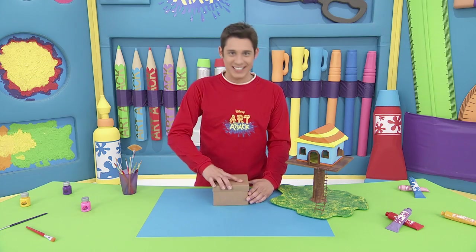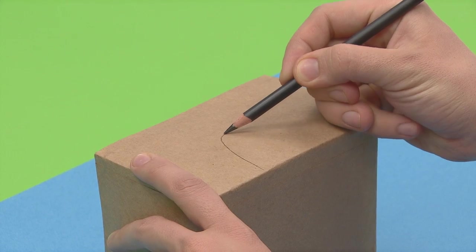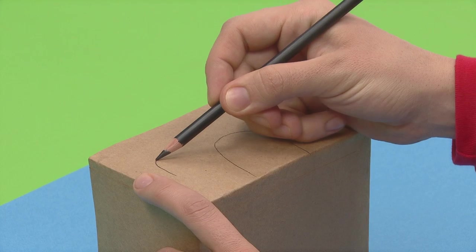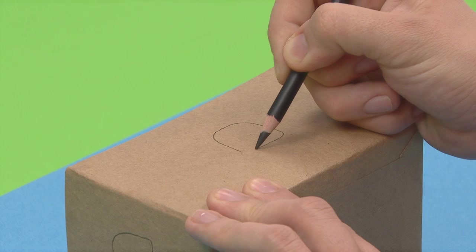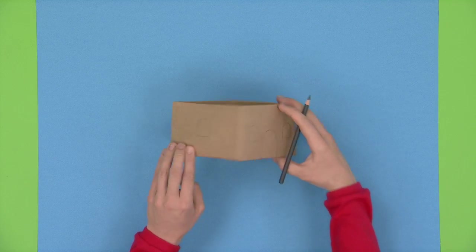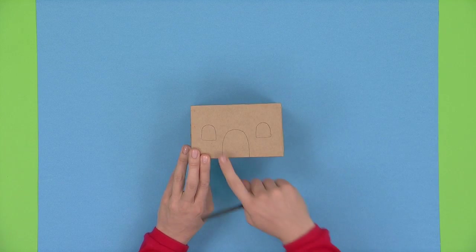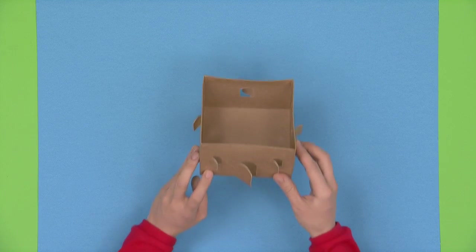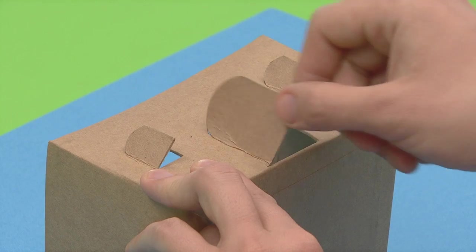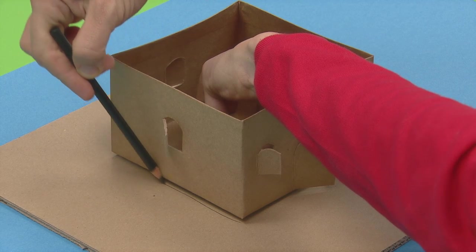Draw a door and some windows onto one side of the box. On the other side, draw only windows. Cut the box when you're done. For all the cutting we'll be doing today, ask an adult's help. Leave one side of the door on so that it can open and close.